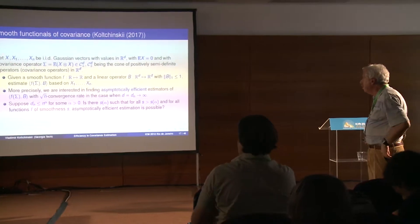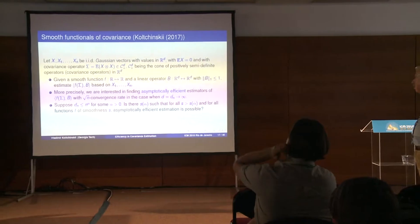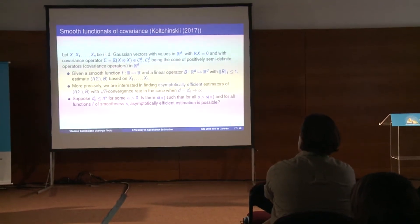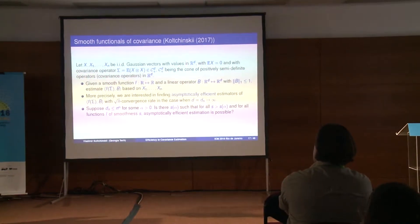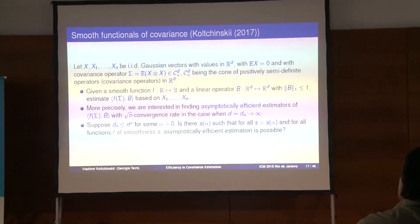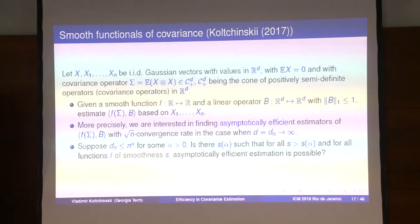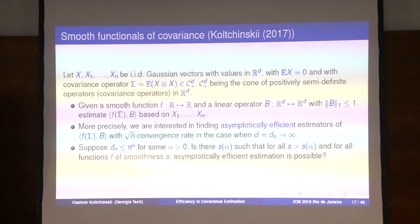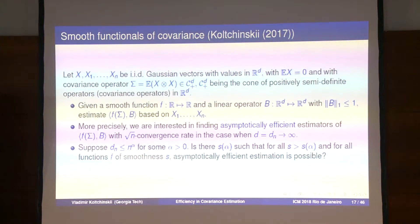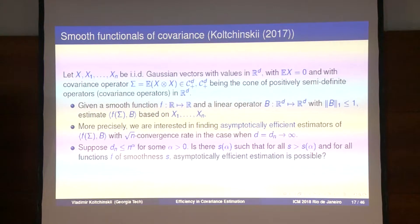The problem I will be looking at is this: the data consists of IID Gaussian vectors with mean zero and covariance sigma in R^d. Given a smooth function on the real line, you first apply this function to the covariance operator — getting an operator-valued object via continuous functional calculus — and then take a linear functional of this operator, multiplying by some operator whose nuclear norm is bounded by a constant. This includes things like matrix entries of f(sigma) in some basis, or more generally linear forms of f(sigma). That is the object I am trying to estimate.